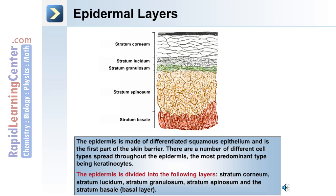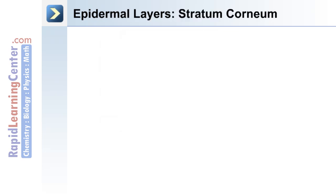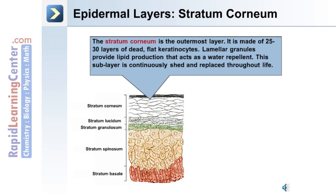There are a number of different cell types spread throughout the epidermis, the most predominant type being keratinocytes. Let's discuss each layer in detail beginning with the most superficial layer, the stratum corneum.